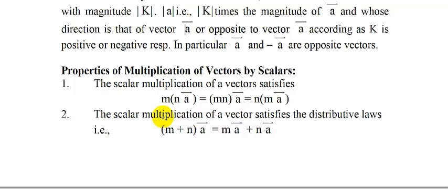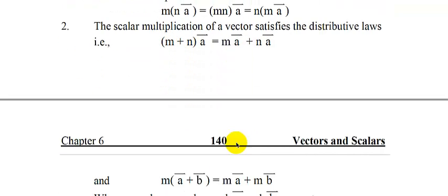The second property is the distributive law. If we have two scalars m and n, we sum them up and multiply with vector a. Then (m + n) times a equals m times a plus n times a. This is the distributive law which the multiplication of vector by scalar follows.